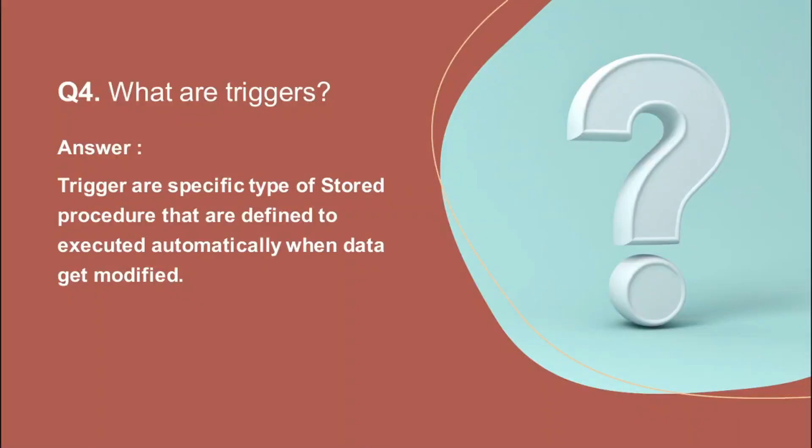The fourth question is: what are triggers? A trigger is a specific type of stored procedure that is defined to execute automatically when data gets modified. So triggers execute automatically when data is inserted, updated, or deleted. If you want something to trigger automatically, you have to write a trigger on it.